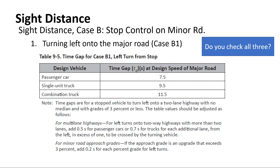Intersection sight distance is a Level 1 design criterion by INDOT rules — meaning it's critically important. If you don't achieve the required intersection sight distance, you have to redesign the approach. Getting an exception for a Level 1 criterion, especially one that's safety-related, is extremely unlikely. If the passenger car sight distance works, the trucks generally work too because they sit higher and can see farther.